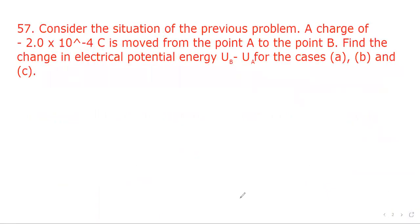Now let's go to next question. Question number 57. Consider the situation of the previous problem. A charge of minus 2 into 10 power minus 4 coulomb is moved from point A to point B. Find the change in electrical potential energy UB minus UA for the cases A, B and C.